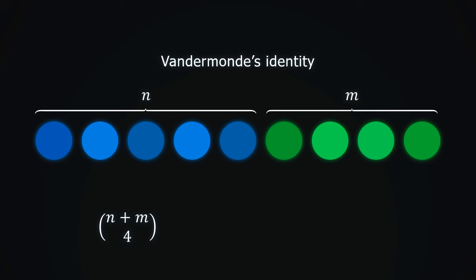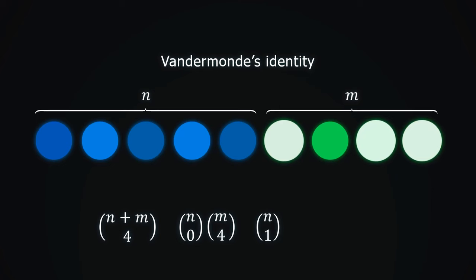We can choose not to take any blue objects and only take green ones. There are n choose 0 times m choose 4 possibilities for this. Then we can take 1 blue and the remaining 3 green objects. We have n choose 1 times m choose 3 possibilities for this.